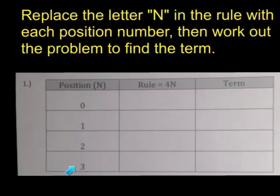And then the answer is going to go over here in the right hand column in the term box. So to do that we're going to replace the letter n in the rule with each one of the position numbers. We're going to write the new rule including the position number in the center, work it out, and then find each term.